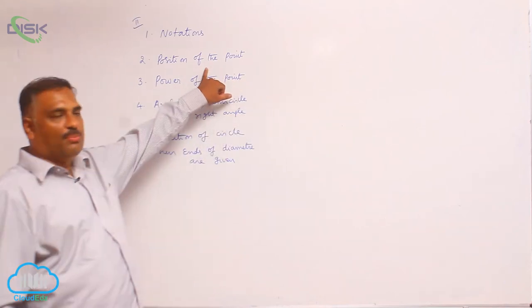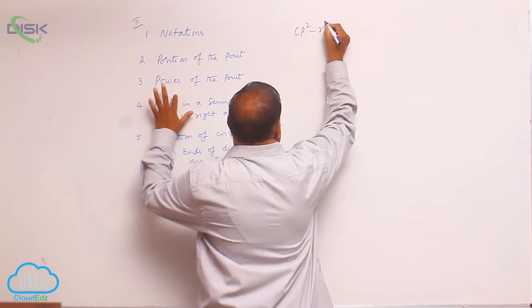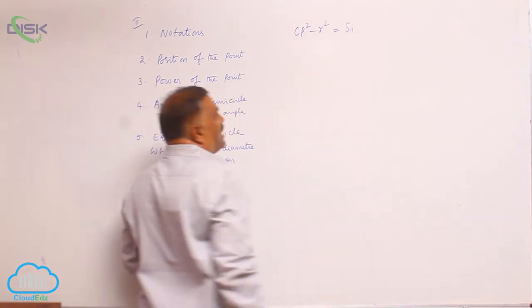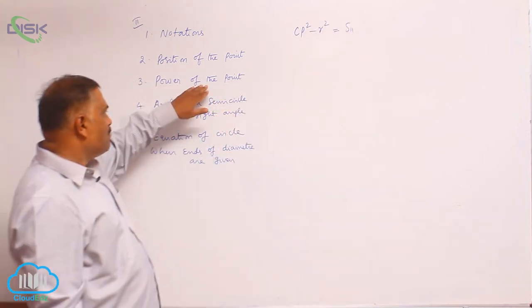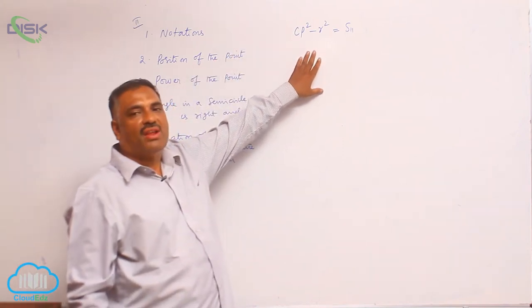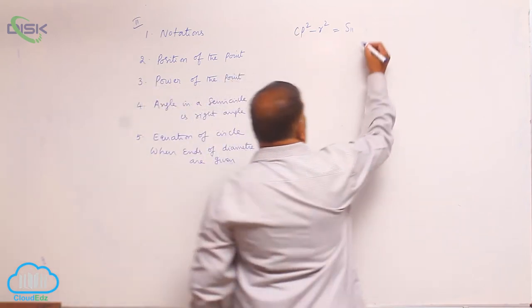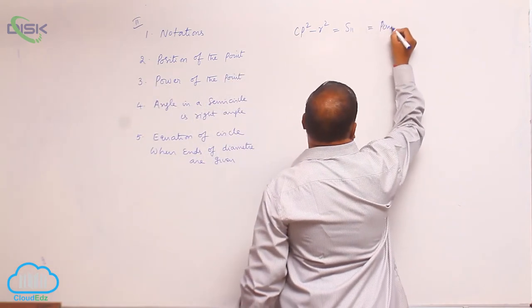Just now we discussed the position of the point. Originally, CP square minus R square equals S₁₁, which we earlier denoted as position of the point. Basically, it is defined as power of the point. CP square minus R square equal to S₁₁ is defined as power of the point.